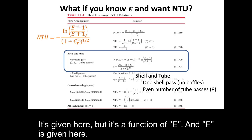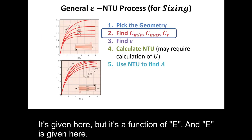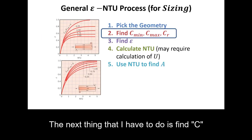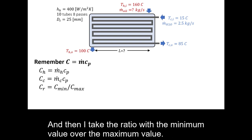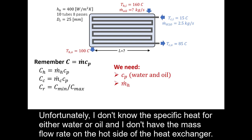The NTU correlation is a function of capital E, which is given in the table. The next step is to find capital C, which is the mass flow rate times the specific heat for each fluid, and then I take the ratio of the minimum value over the maximum value. Unfortunately, I don't yet know the specific heat for either water or oil, and I don't have the mass flow rate on the hot side.